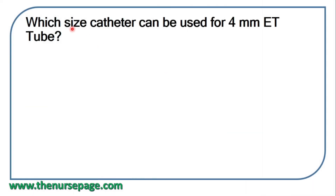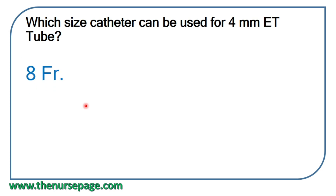Next question: which size suction catheter can be used for a 4 mm endotracheal tube? Correct answer: 8 French suction catheter can be used for a 4 mm ET tube.